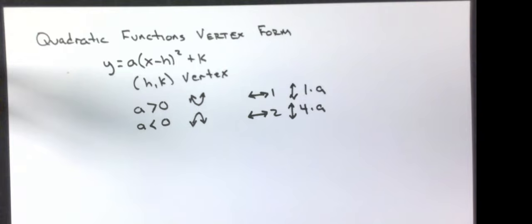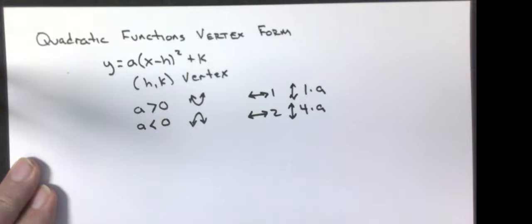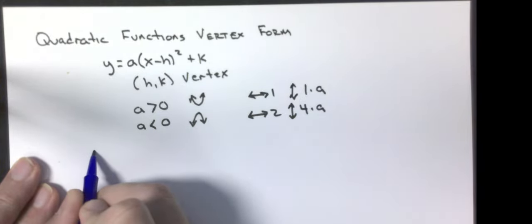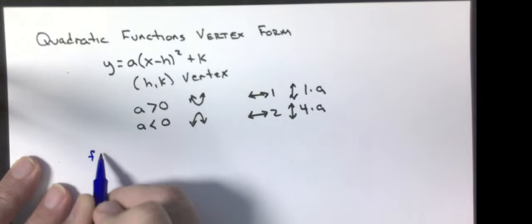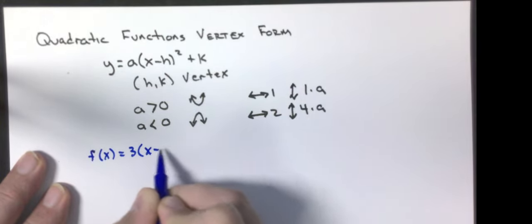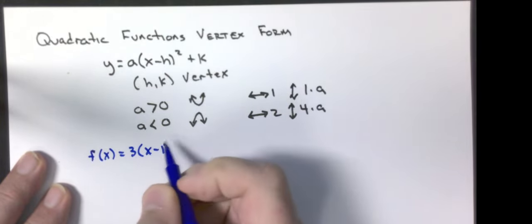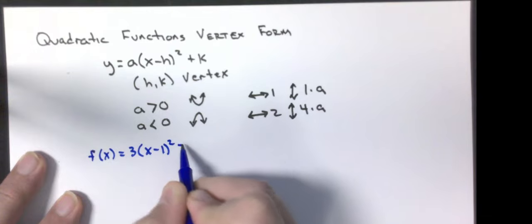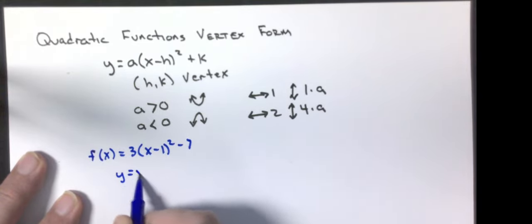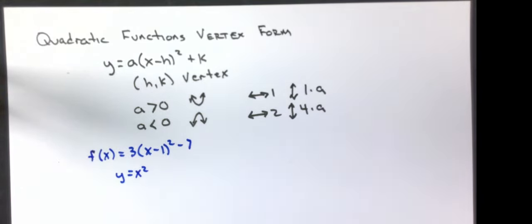I'm going to graph f(x) equals 3 times x minus 1 squared minus 7. I'm also going to graph y equals x squared just so we can see what the 3 is doing to the function.